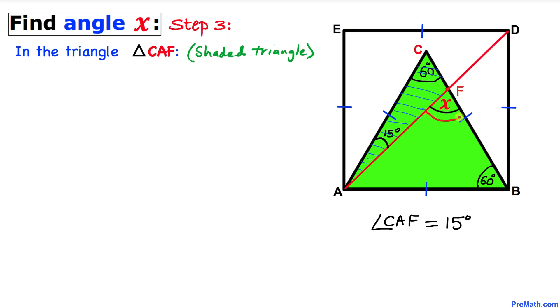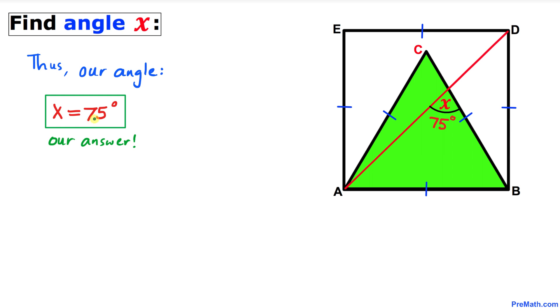So therefore, we can write angle X equal to angle CAF plus angle ACF. Now let's go ahead and calculate the value of this angle X. X equals, we know that angle CAF is simply 15 degrees plus this other angle ACF is 60 degrees. Let's add them up. So our angle X turns out to be 75 degrees.